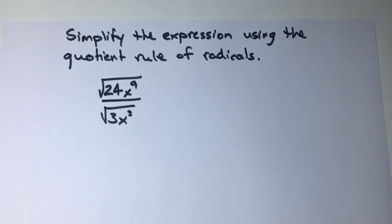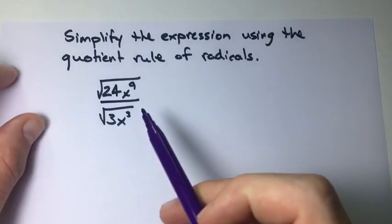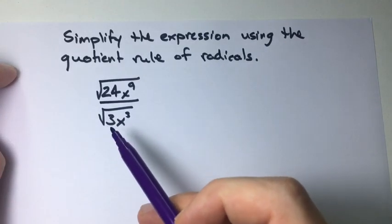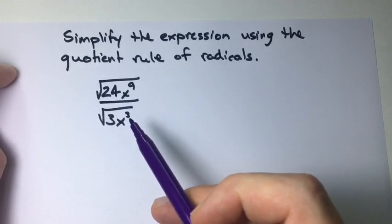Alright, in this example we want to simplify the expression using the quotient rule for radicals. So let's look at our example. We have the square root of 24x to the power of 9 divided by the square root of 3 times x to the power of 3.